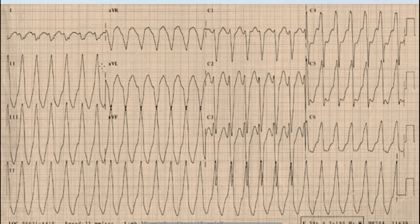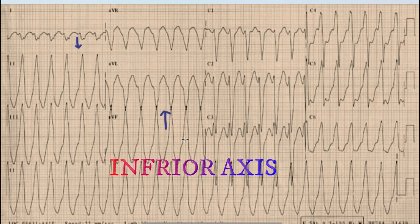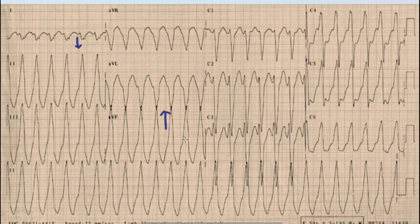When we look at the axis, the QRS complex is predominantly negative in lead I while it is positive in lead aVF. So this is right axis deviation, also called inferior axis, because the axis is more than 90 degrees in this case.